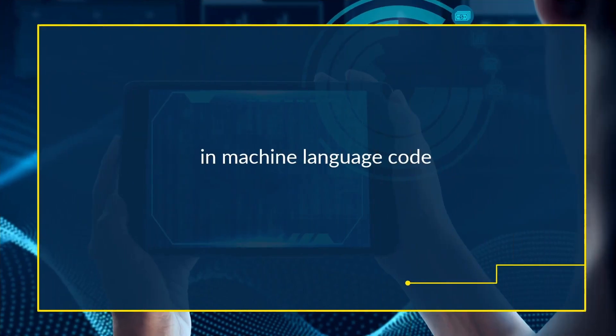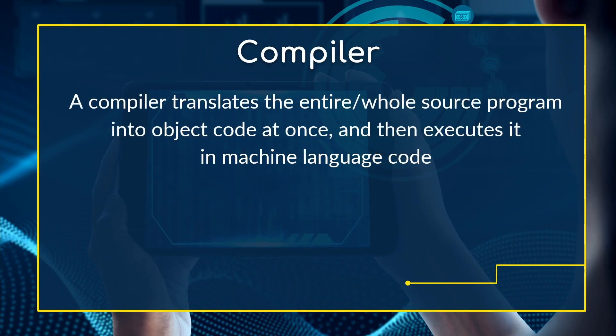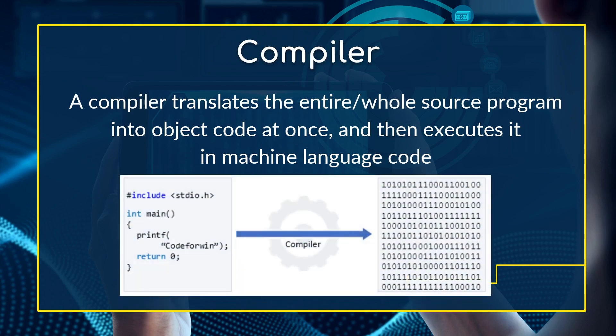Finally, we have the compiler. For the compiler, it translates the entire or whole source program into object code at once, and then executes it into language code. So if you use the compiler to convert your source code into object code, it will be converted all at once. That is how the three language translators work — the assembler, the compiler, and the interpreter.